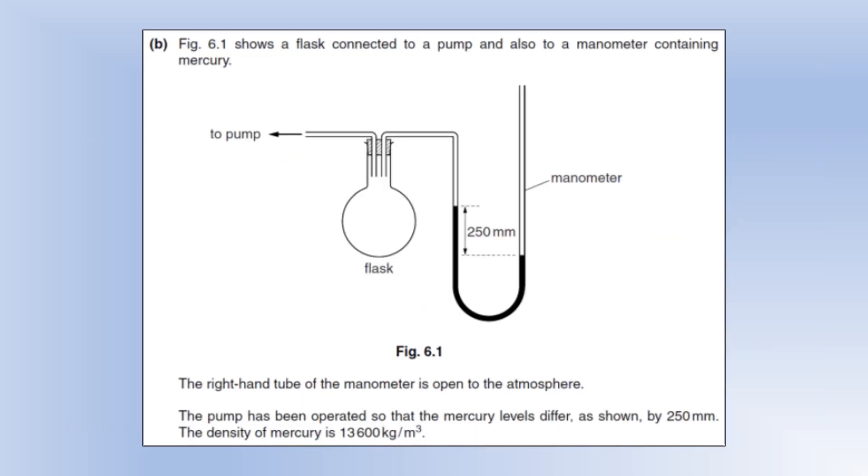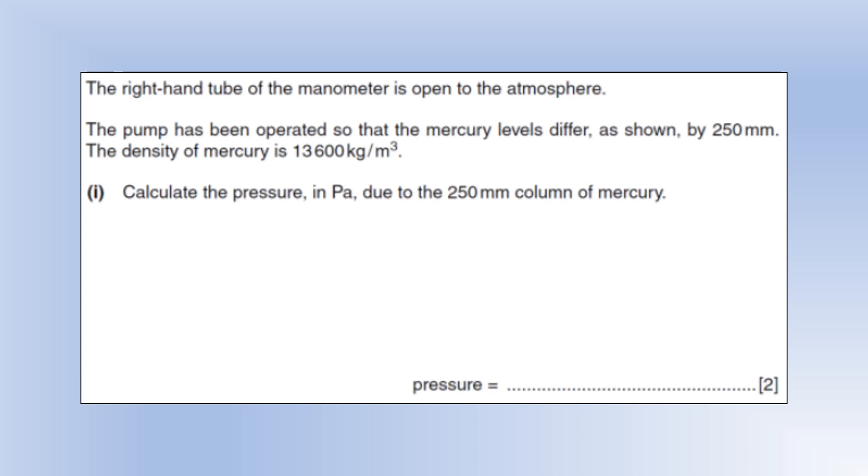Okay, so we've got a flask connected to a pump and also a manometer containing mercury, so that manometer being the U-shaped tube we can see there. And we can see we've got a height difference on the liquids in the manometer, which indicates there is a difference in pressure either side. Okay, so the right side is at atmospheric pressure and then the other side is going to be at a different pressure. It's going to be a lower pressure because it's higher on that side. Okay, so we've got mercury and we've got a height difference of 250. The density is 13,600.